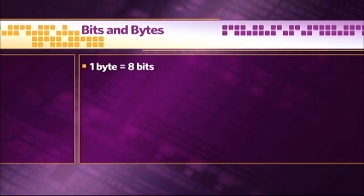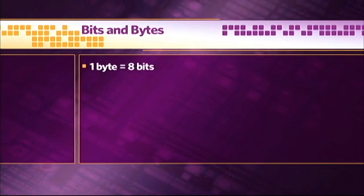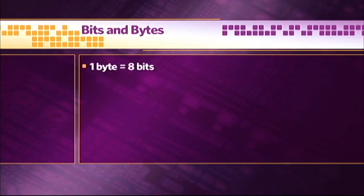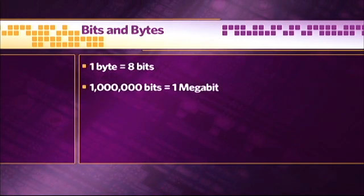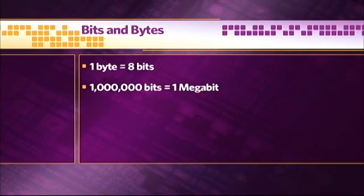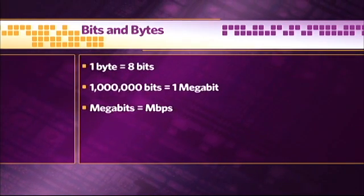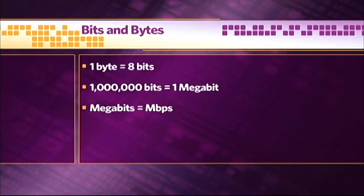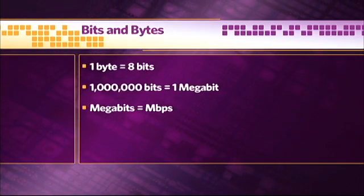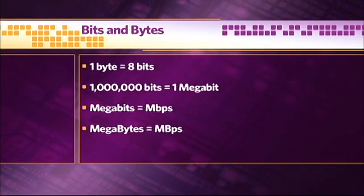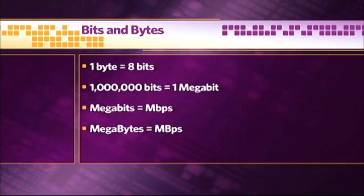Now when you want to describe a million of something, you add the prefix mega to it. So a million bits is a megabit. Megabits are also abbreviated Mbps — notice the small b. Megabytes are abbreviated MBps, or simply MB — notice the big B.